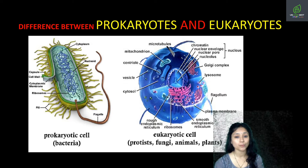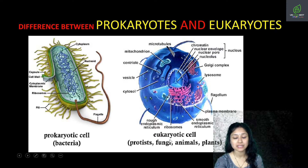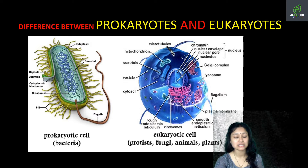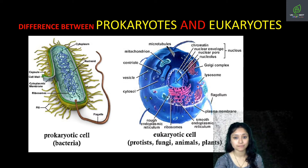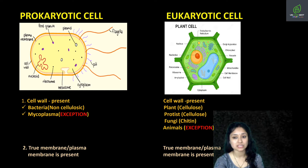As you know, prokaryotes are single-celled organisms, for example bacteria. While eukaryotic organisms are multicellular organisms along with unicellular eukaryotes. For example, several protists like amoeba, paramecium, and euglena. So class, let's start with the detailed differences between prokaryotic cell and eukaryotic cell.